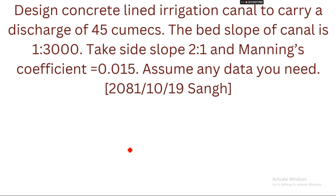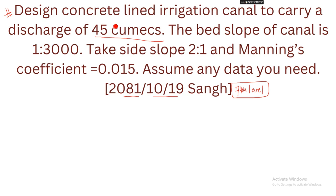Hello everyone, welcome to Engineer. This question was asked in the 2081-10-19 Song Federal Exam, seventh level. The question says: design a concrete-lined irrigation canal to carry a discharge of 45 cumecs (45 m³/s). The bed slope S is given as 1/3000, side slope is 2:1, and Manning's coefficient n is given as 0.015.